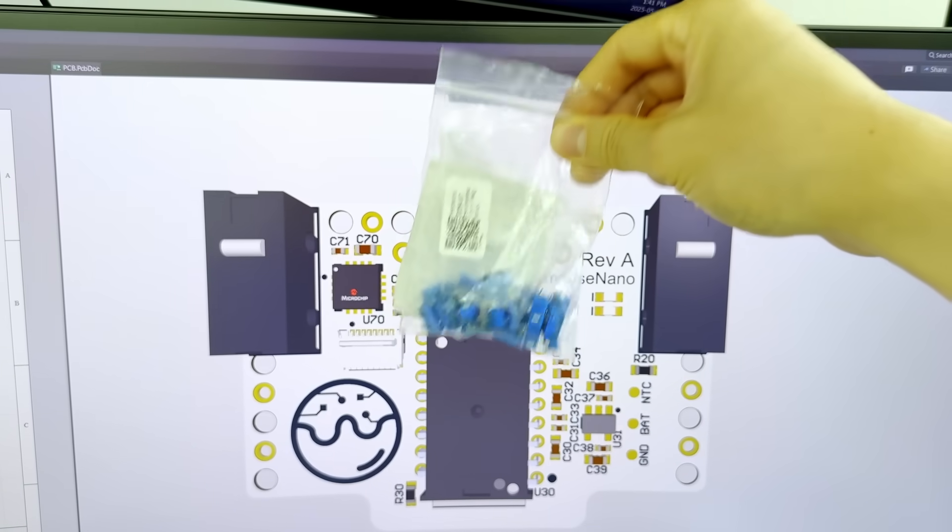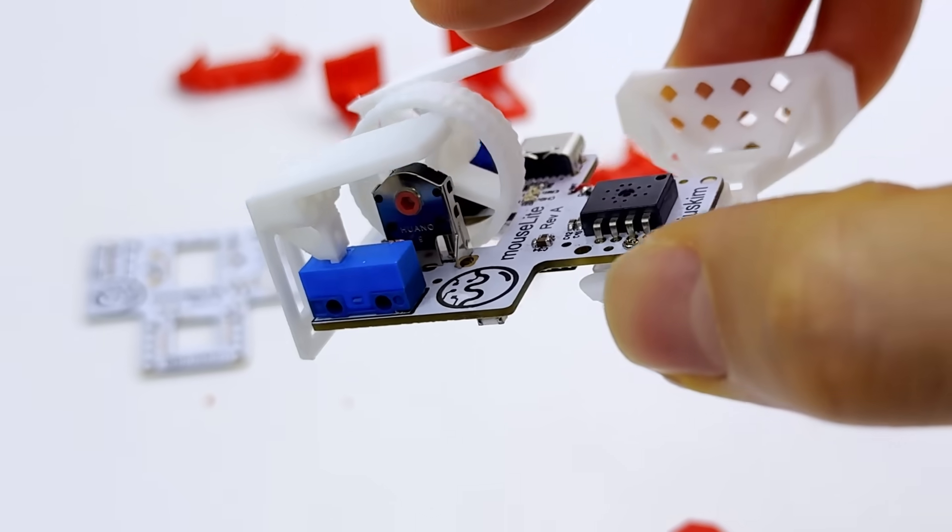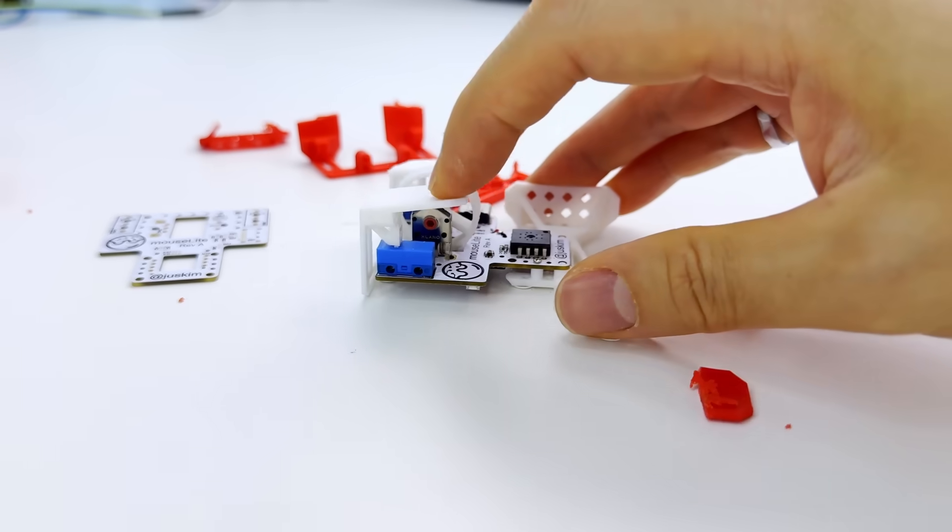For the micro switches, I'll be using these white dot blue shell for the left and right clicks. They've been great so far, but let me know if you guys have other recommendations in the comments.